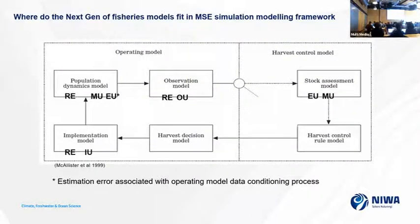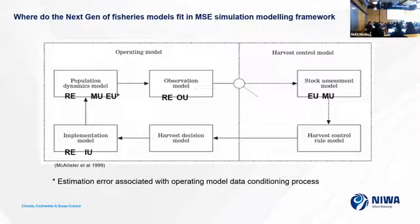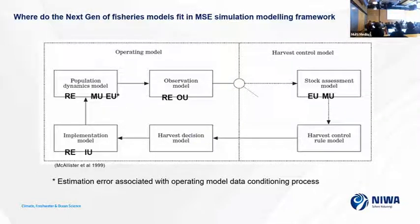When you look at the general modeling framework of an MSE, there are actually six models that can be in there — six independent models or six models that need to communicate information. Or models can do some of these functions. The minimum is two: an operating model side and an estimator side. But all those components need to be encapsulated in the models used. I've attempted to show where those key areas of uncertainty would be introduced at those modeling or functional levels.